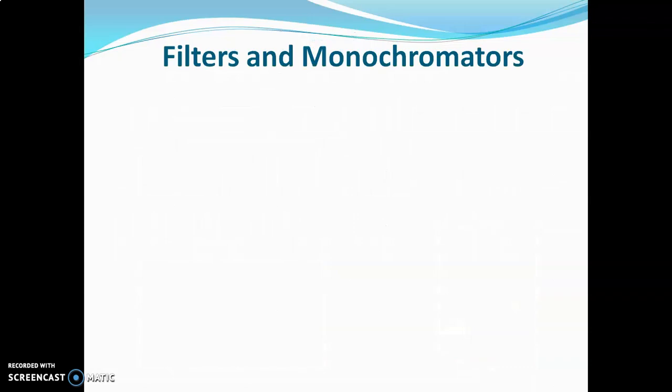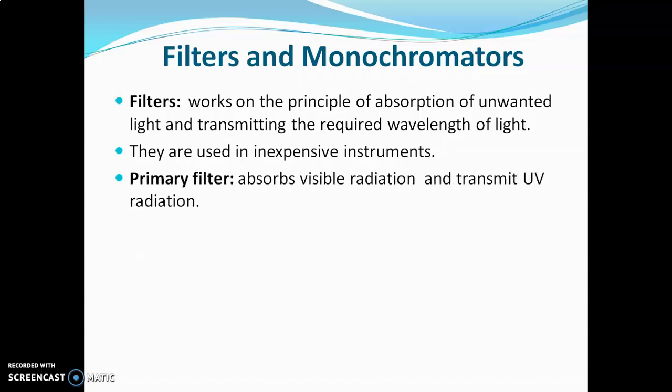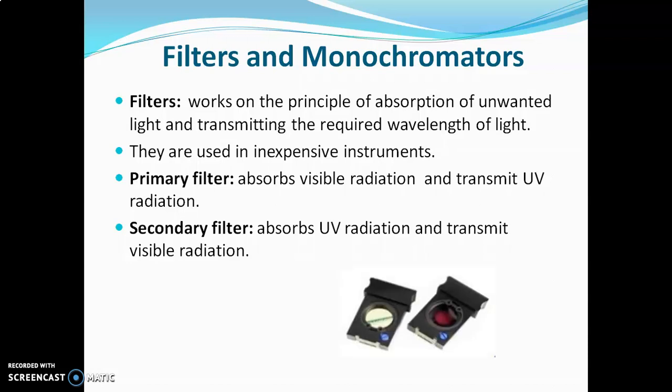Filters work on the principle of absorption of unwanted radiations and transmitting the required wavelength of light; such filters are known as absorption filters. Filters are used in inexpensive instruments. There are two types: primary filters, which absorb visible radiation and transmit UV radiations, and secondary filters, which absorb UV radiation and transmit visible radiations. Both types of filters are present in a fluorimeter.